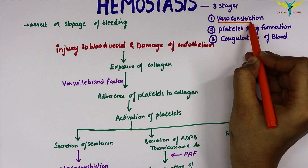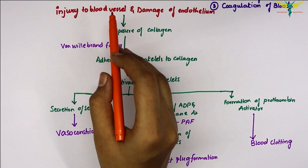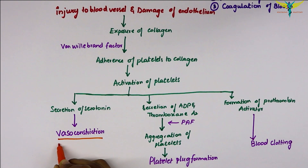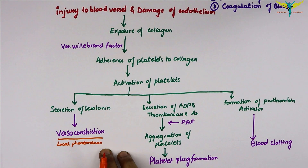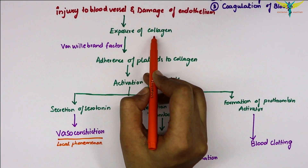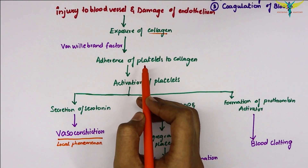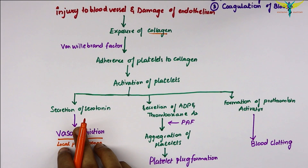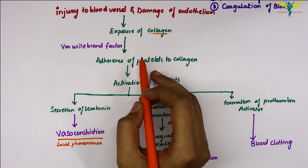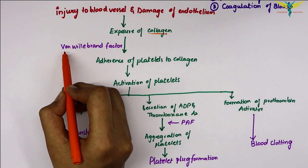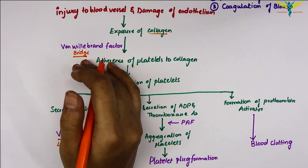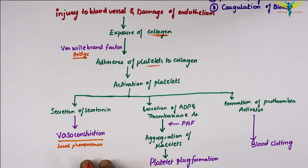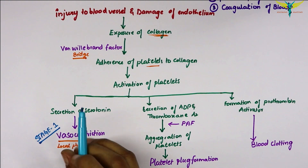Stage one is vasoconstriction. Immediately after injury to the blood vessel, the vessel constricts and decreases blood loss from the damaged portion. Vasoconstriction is purely a local phenomenon. When the endothelium is damaged, collagen gets exposed and activated platelets secrete serotonin and other vasoconstrictors, causing constriction. Adherence of platelets to collagen is accelerated by von Willebrand factor, which acts as a bridge between a glycoprotein on the platelet surface and the collagen fibers.